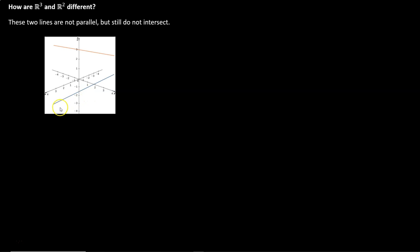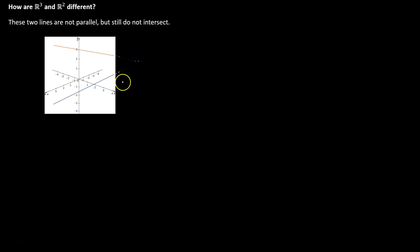On the screen we have a blue line and a red line. These two lines will never intersect — they're called skew. This red line continues this way, the blue line continues this way. They are never going to cross into each other. The red one will go right over the blue one without ever touching it, but these lines are not parallel. We call them skew. Skew did not exist in two dimensions; it's a new idea for 3D.